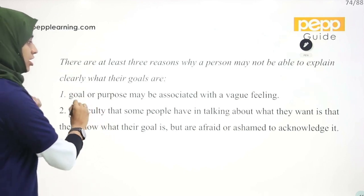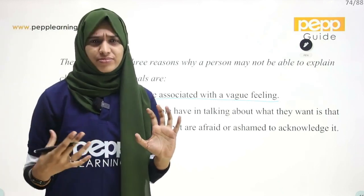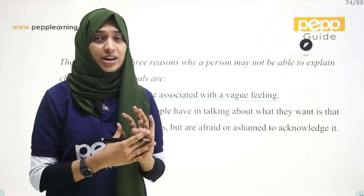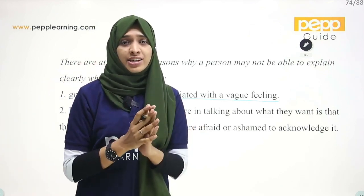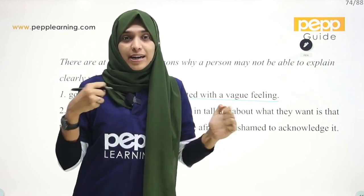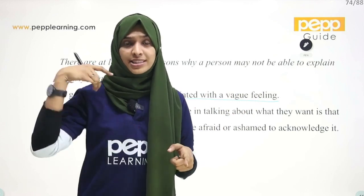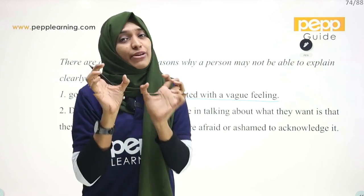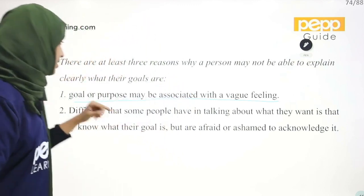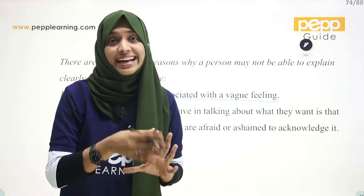The goal or purpose may be associated with a vague feeling. There is a purpose, there is a goal, but if it is associated with a vague feeling, there are many problems. If you have parents, if you have friends, if you have a vague feeling, it will remain a vague feeling.